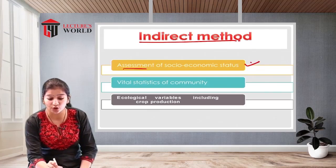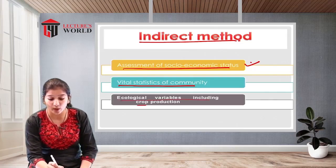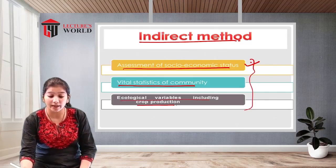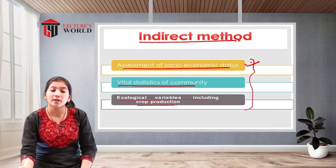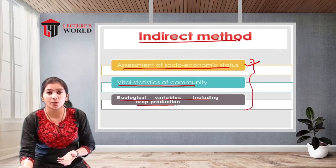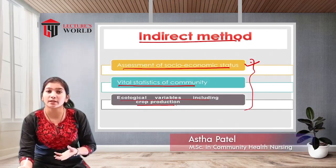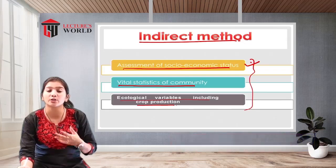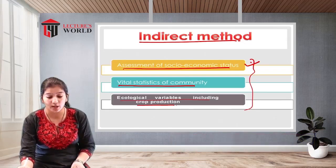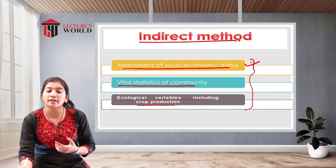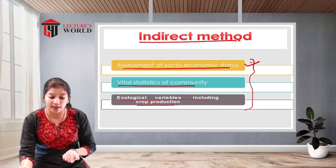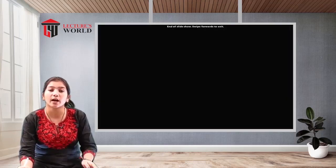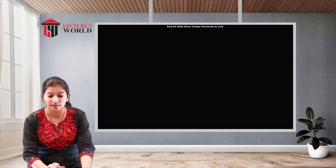The indirect method has three types: assessment of socio-economic status, vital statistics of the community, and ecological variables including crop production. For example, if a person's socio-economic status is high, their nutritional status is likely good; if they are poor, they may not be able to purchase food and may develop nutritional problems. Vital statistics and ecological variables also help in the nutritional assessment.